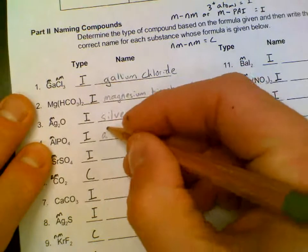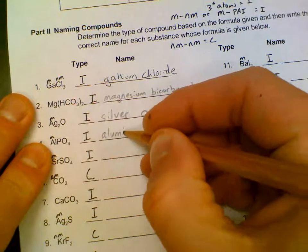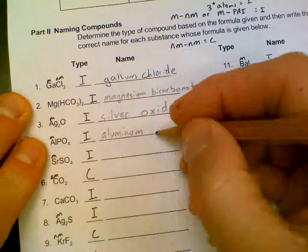Al is aluminum. PO4 is called phosphate.